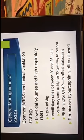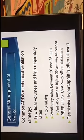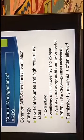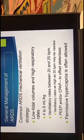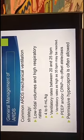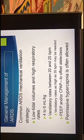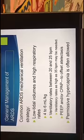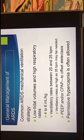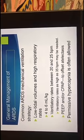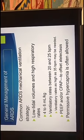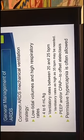Common ARDS mechanical ventilation strategy including low tidal volumes and high respiratory rate. Low tidal volume between 4 to 6 ml per kg. Respiratory rate between 20 to 25. We may need to go up to 35 breaths per minute. Also, sometimes we allow for permissive hypercapnia.